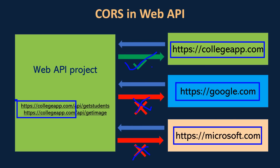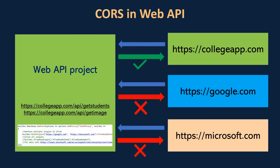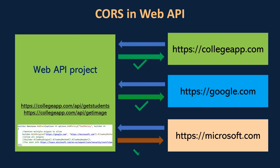When there is a request from the same origin it succeeds, and when there is a request from different origins it fails. So how can we make those second and third requests succeed? We can share the resources with other domains by adding a CORS policy. Here you can see a CORS policy we can add to our Web API project — I have added google.com and microsoft.com as the whitelisted origins. After adding this CORS policy, our Web API will accept requests from google.com and microsoft.com. That is how we can share resources with other domains, different domains, or cross origins.